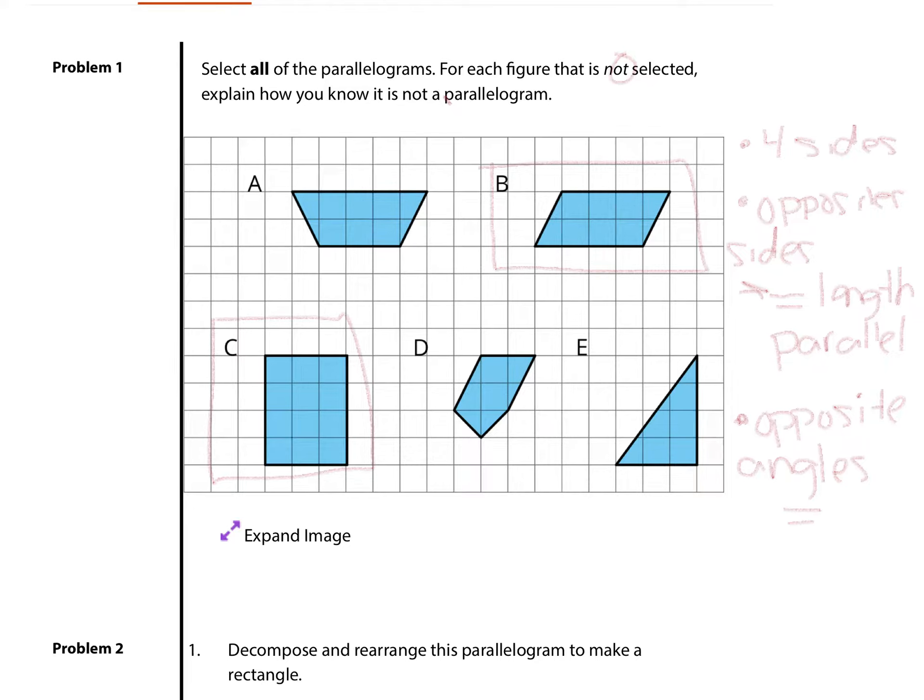If we go through and say, why is A not a parallelogram? We look at those two sides. For A, opposite sides not parallel. You could also say that these opposite sides here and here are not even the same length. It's a trapezoid.